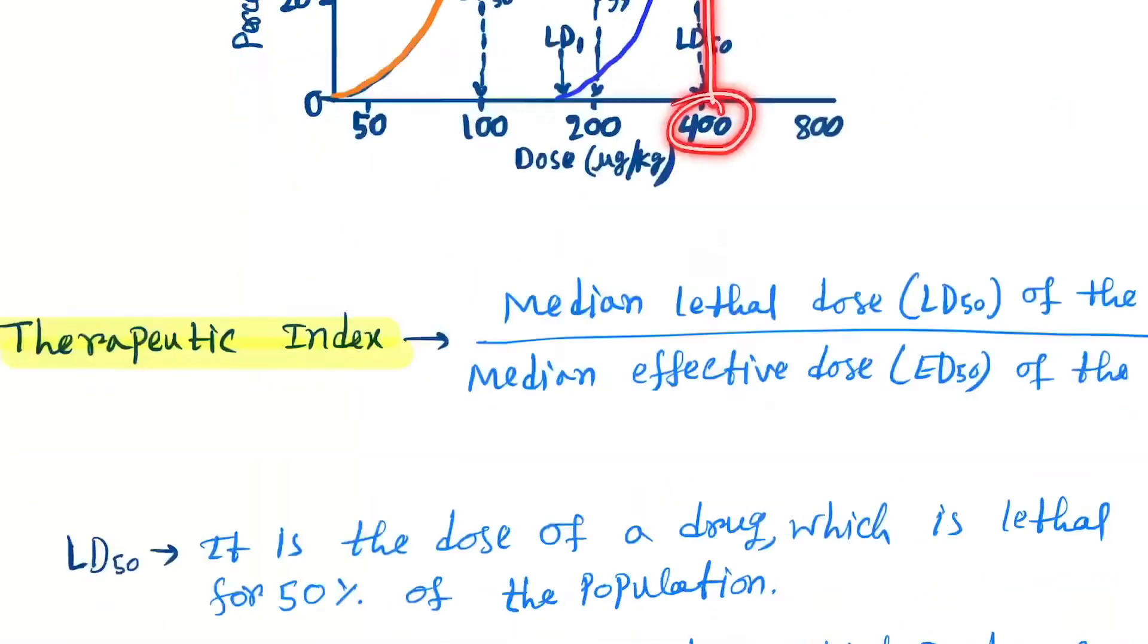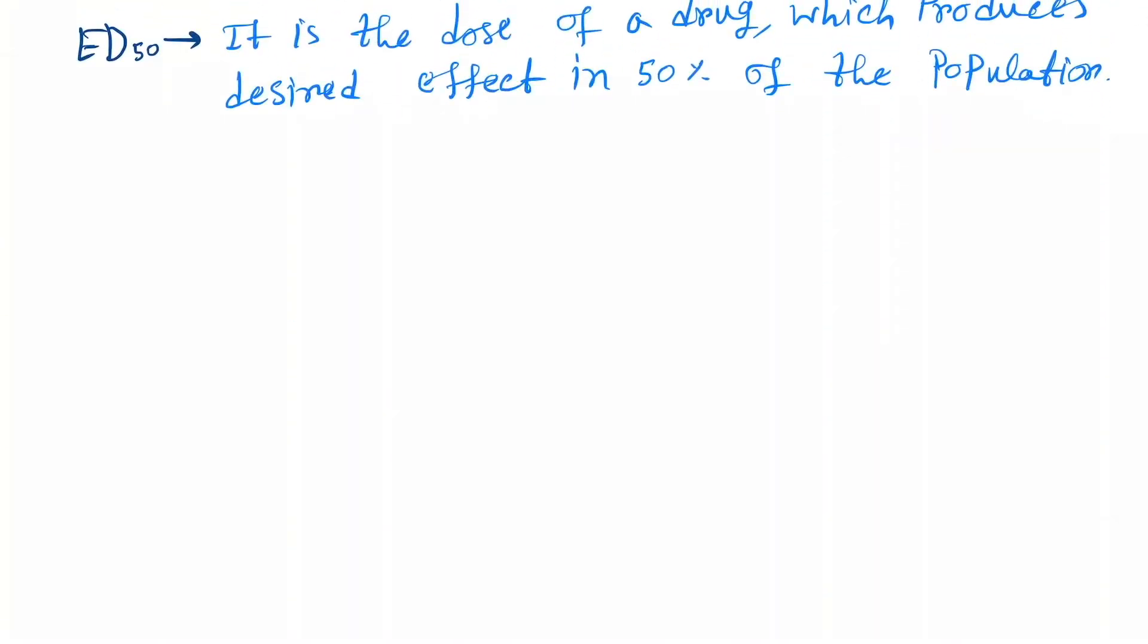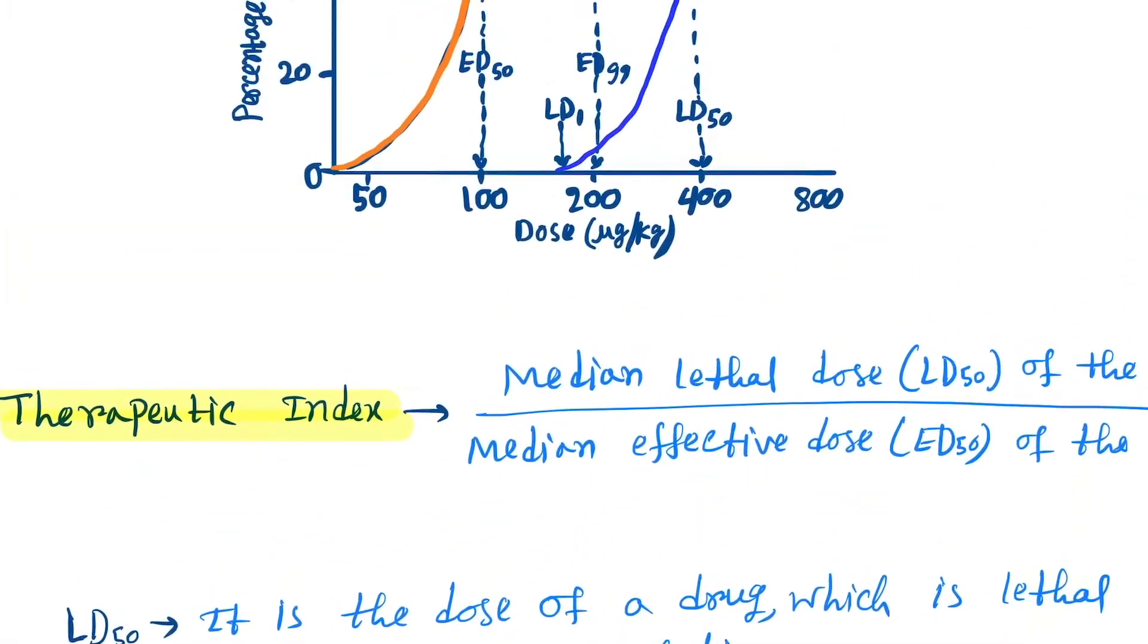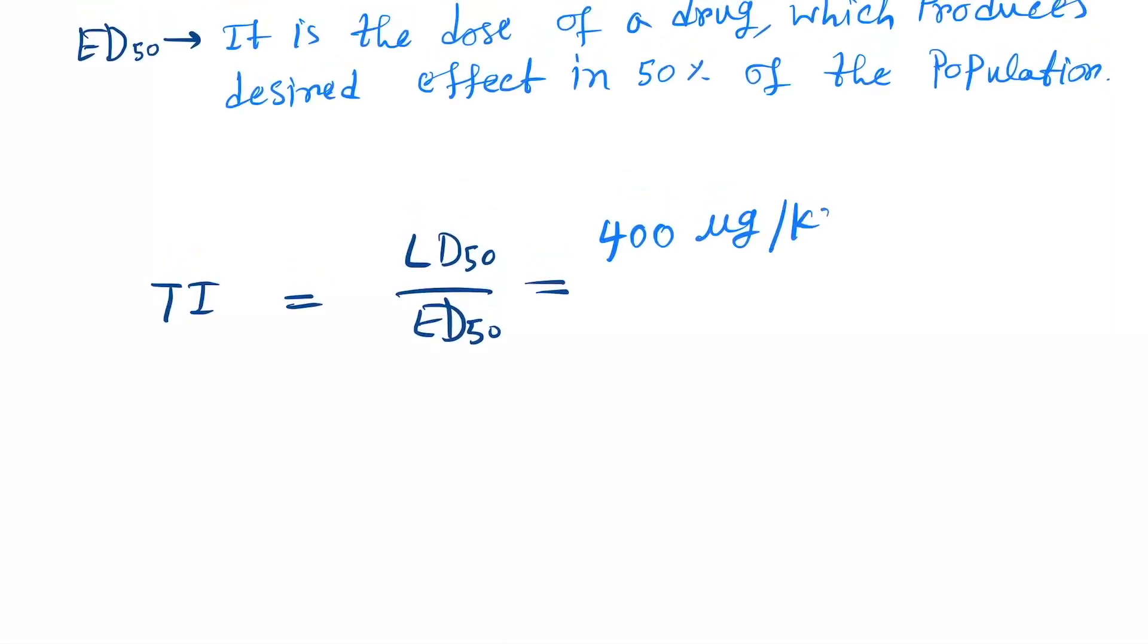In this case, you have to mention the units also. So it's 400 micrograms per kilogram divided by 100 micrograms per kilogram.